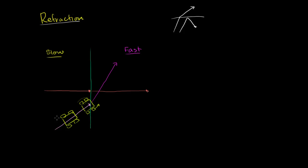When you go from a slow to a fast medium, the P wave's angle accentuates in that direction. If you go from the fast medium to the slow medium, you can go through the same thought experiment. You'd say: this tire is going to get stuck in the mud first — the top left tire — so it's moving slower. The other tires move faster, so the vehicle turns. You'll be refracted in the opposite direction when going from fast to slow medium.